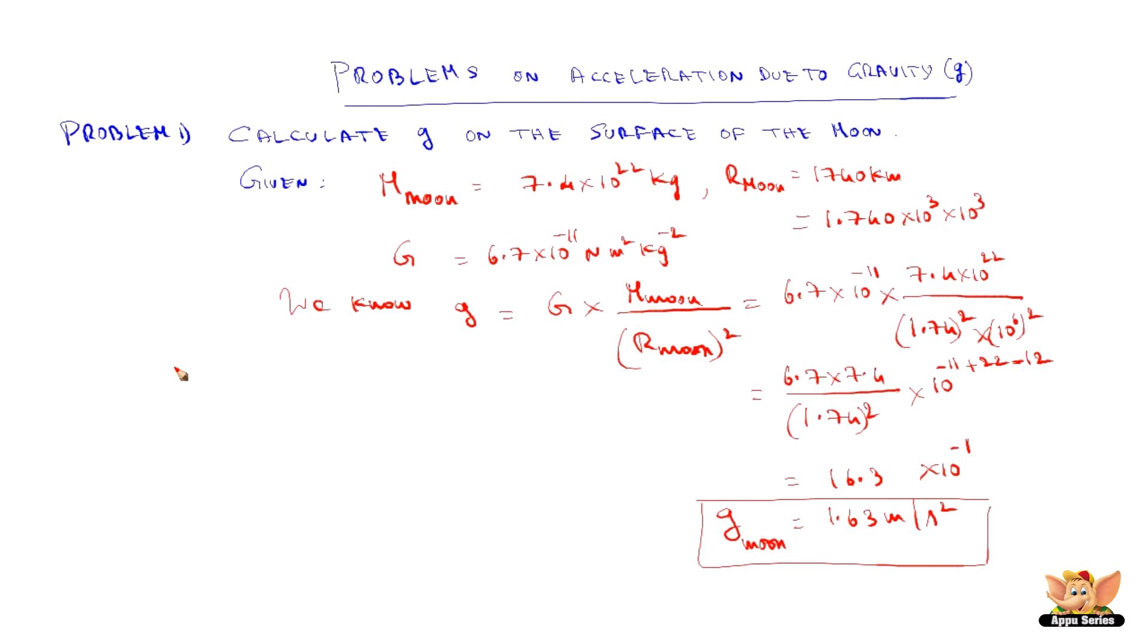So when we compare g on the moon to g on the earth we come out with an amazing fact that if you see the ratio of g moon to g earth, g moon is 1.63 and g earth is 9.8 so we get 1 by 6.